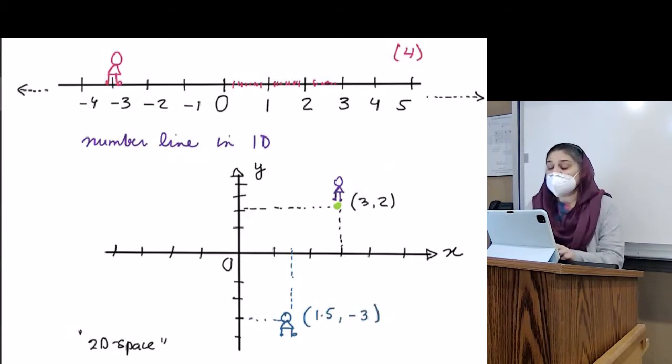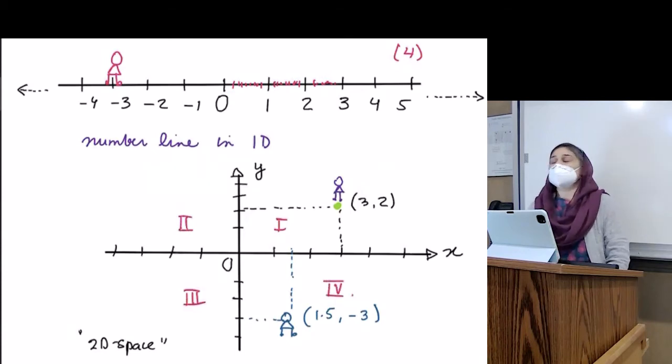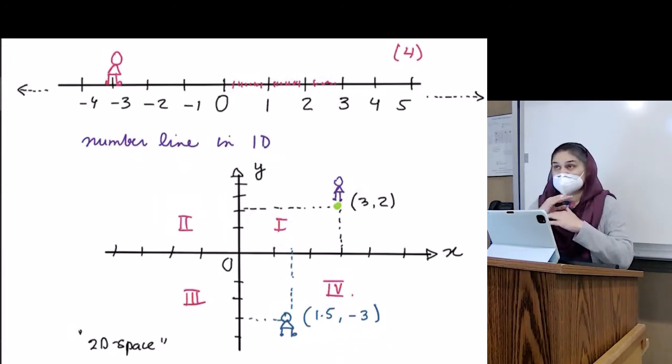And each of these are called quadrants. So this is quadrant 1, this is quadrant 2, this is quadrant 3, and this is quadrant 4. Why? Because it's just easier. Somebody came up with this scheme and we all understand it. We all know how it works and it's around the world.